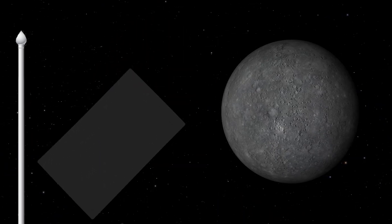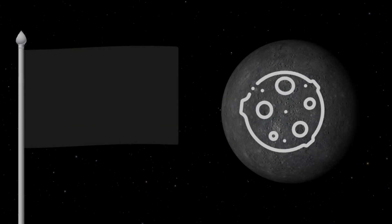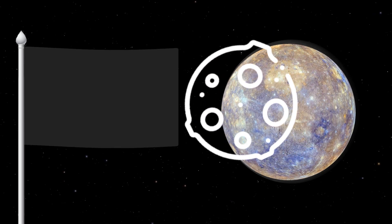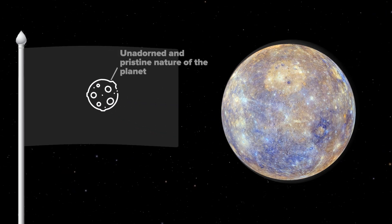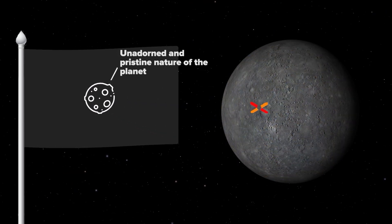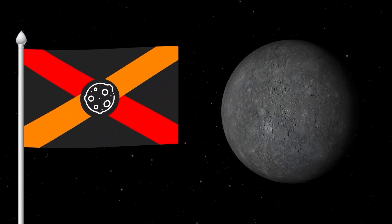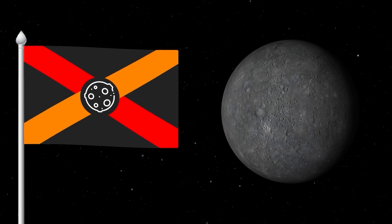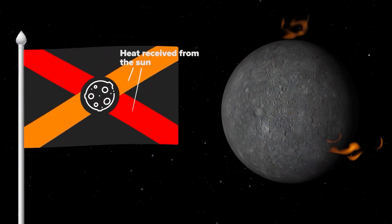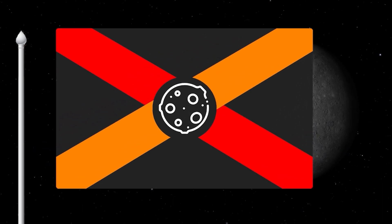First of all, the flag will have a black background to show the darkness of space. In the center of the flag will be Mercury itself in white, symbolizing the unadorned and pristine nature of the planet. The flag will also have two diagonal lines, one red and one orange. These two stripes symbolize the heat received from the Sun. Overall, the flag is very interesting.